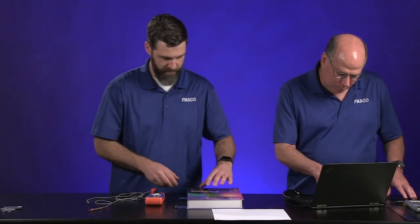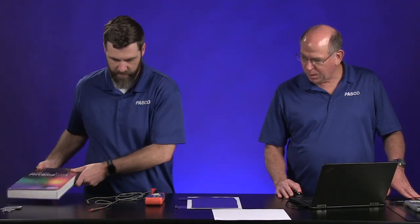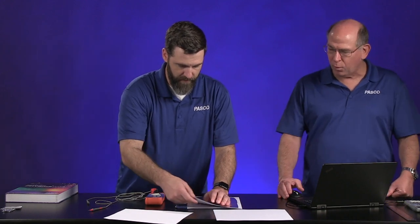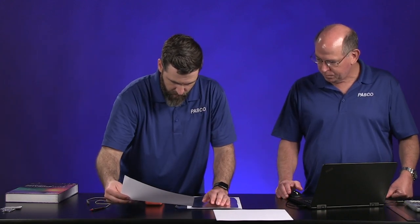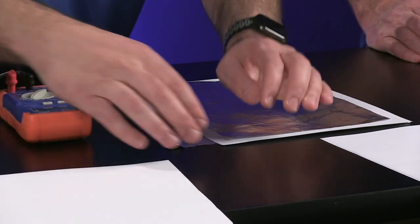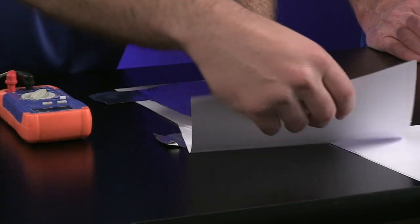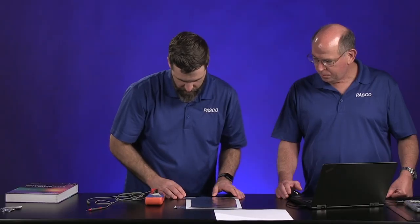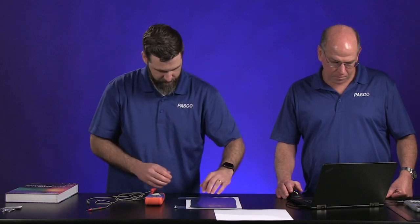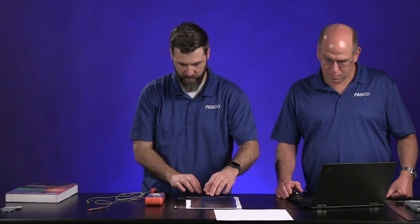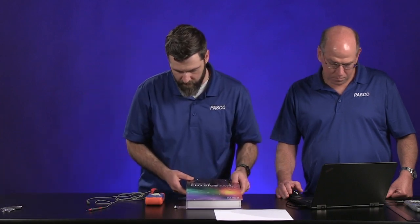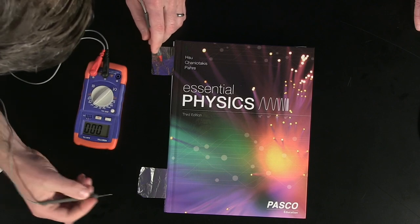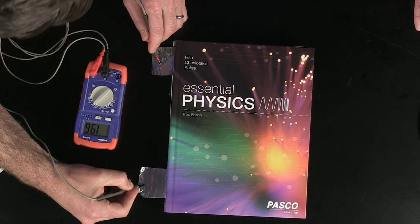So the further apart, it seems like that makes the capacitance go down. What kind of relationship is that called? That's an inverse relationship, right? Inverse. That's what it's looking like with two points. You can't really say much though. So let's triple the distance from our original data point. Now put the book on top. We've got three sheets of paper spacing between the capacitor plates. 1.96 nanofarads.